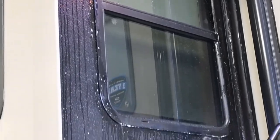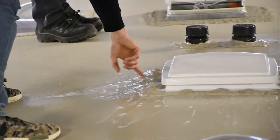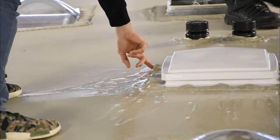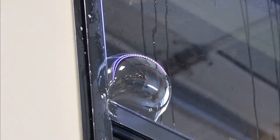By spraying a soapy solution all over the RV, the certified technicians are able to detect any leakage with the formation of bubbles in the areas where the air is seeping from the seams.